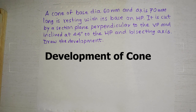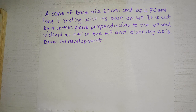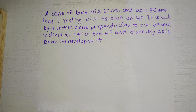The next problem is about a cone. A cone of base diameter 60 mm and axis 70 mm long is resting with its base on HP. It is cut by a section plane perpendicular to VP and inclined at 45 degrees to the HP, and the cutting plane is bisecting the axis. Draw the development.